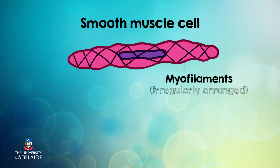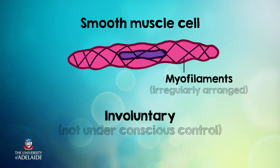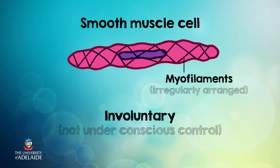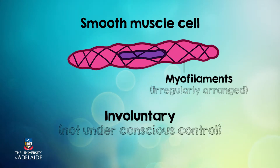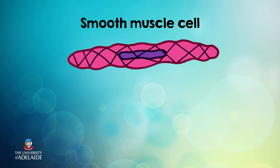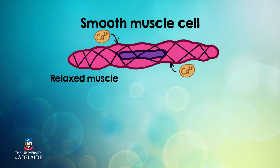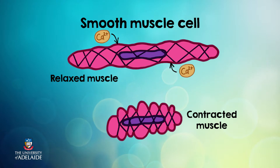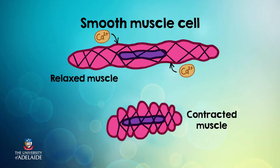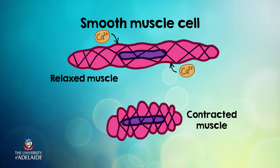Another different feature of smooth muscle is that it's not under the same type of control as skeletal muscle. It doesn't have the same type of neuromuscular junction that we see in skeletal muscle. For this reason, smooth muscle is often called involuntary muscle. Smooth muscle cells contract when calcium ions in their sarcoplasm interact with proteins found there. Unlike skeletal muscle, smooth muscle contraction is slower and more prolonged, and smooth muscles don't get fatigued as easily.